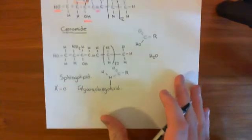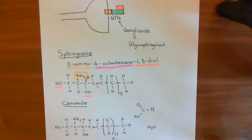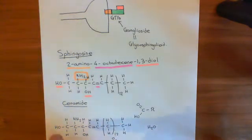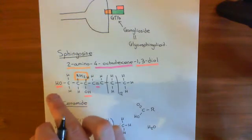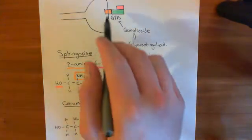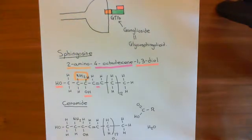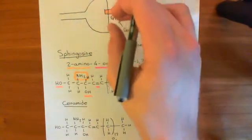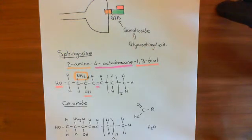A ganglioside, such as this GT1B ganglioside we've talked about, is just a specific type of glycosphingolipid. Effectively, it's one of these ceramides with a large carbohydrate group stuck off this hydroxyl group. These molecules sit in the cell membrane, and they can have these large carbohydrate groups sticking out into the extracellular space — which is likely what the heavy chain of botulinum toxin is binding to.